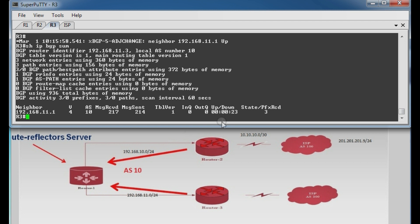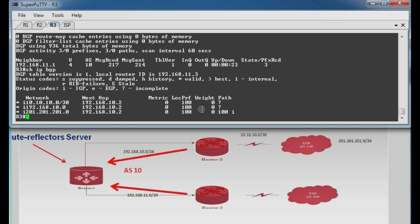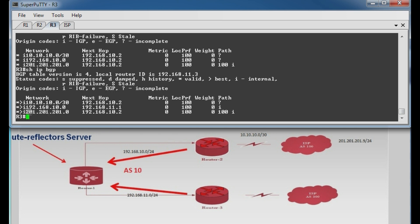Now yeah, it receives three prefixes which it receives from router 2 and it forwards to router 3 without this full mesh. It receives the prefixes from router 1. And now it is able to ping to the destination of 201.201.201.9.